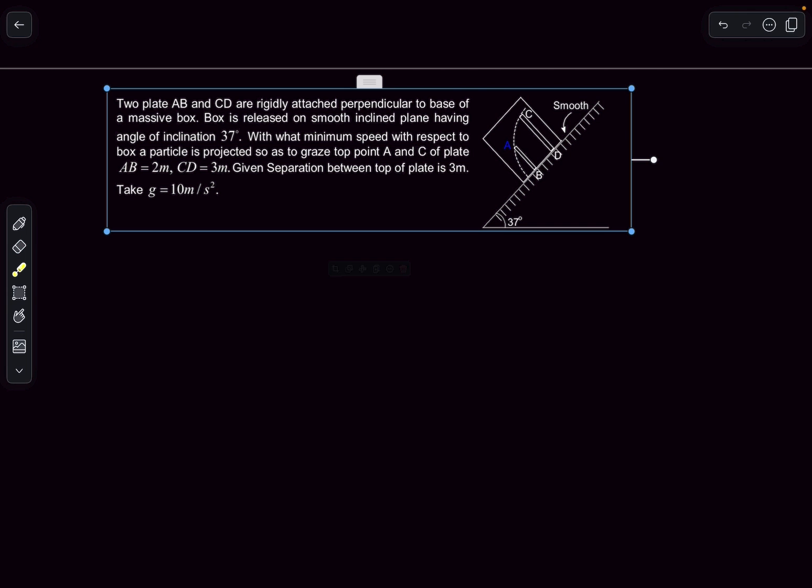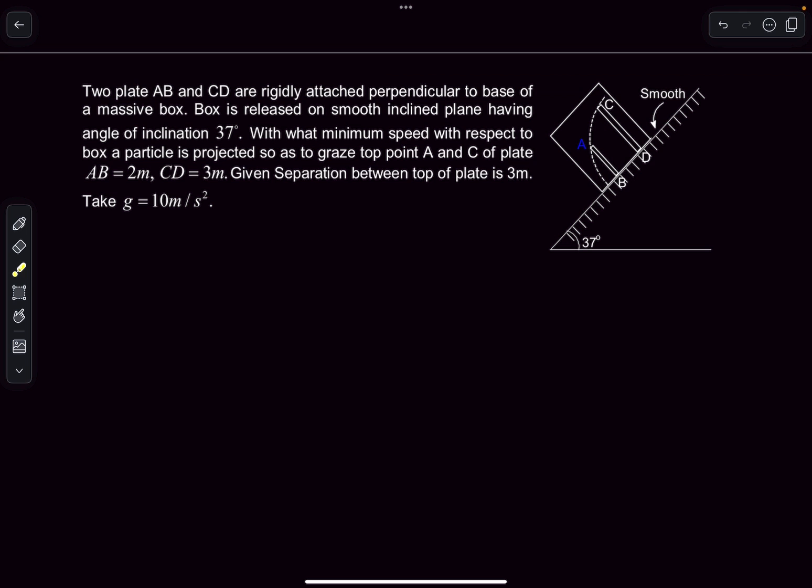Hello everyone, welcome back. In today's video we're going to be taking up a projectile motion problem. In the problem we have two plates AB and CD that are rigidly attached perpendicular to the base of a massive box. This is the box we're talking about. It is released on an inclined plane.